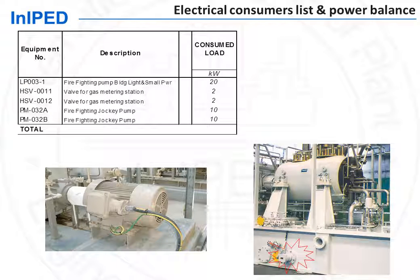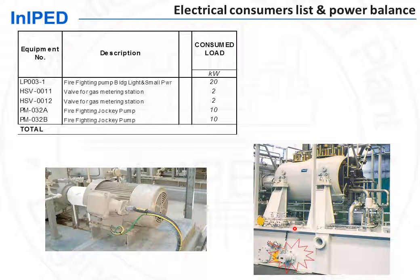The starting point of the electrical engineer is to draw the electrical consumers list. It consists of making an exhaustive inventory of all plant electric power consumers. These include obvious process consumers, such as pumps, as well as some hidden consumers, such as this lube oil heater inside a compressor package.